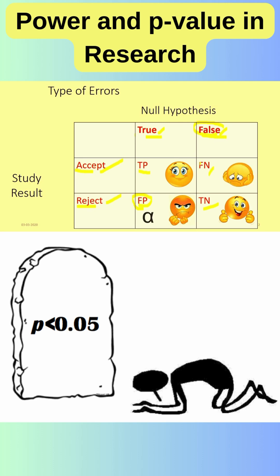This false positive is called alpha error or type 1 error. False negative is called beta error or type 2 error.